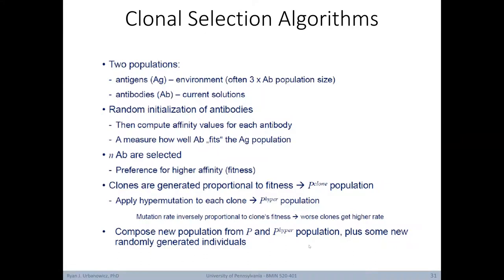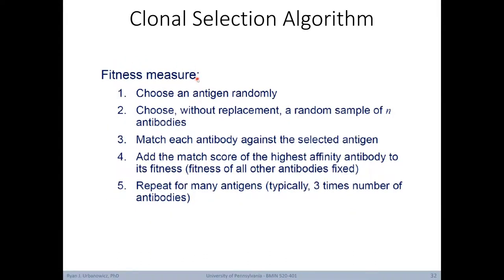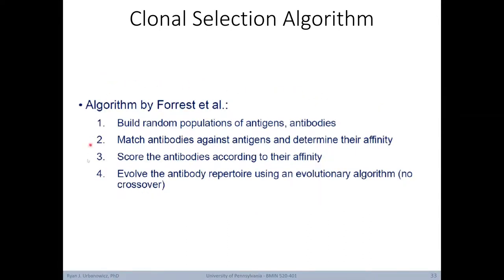From a bird's eye view, the clonal selection algorithm starts by building a random population of antigens and antibodies, matches antibodies against antigens to determine affinity, scores antibodies according to affinity, and lastly evolves the antibody repertoire using an evolutionary algorithm — using just mutation, not crossover, unlike genetic algorithms and genetic programming. To calculate fitness, we choose an antigen randomly, then choose without replacement a random sample of n antibodies, match each antibody against the selected antigen, and add the match score of the highest-affinity antibody. We repeat this for many antigens, typically three times the number of antibodies.